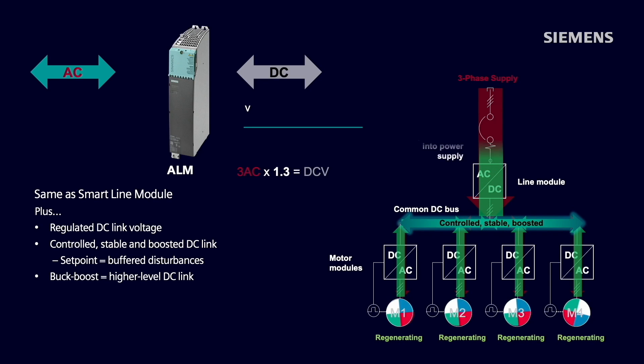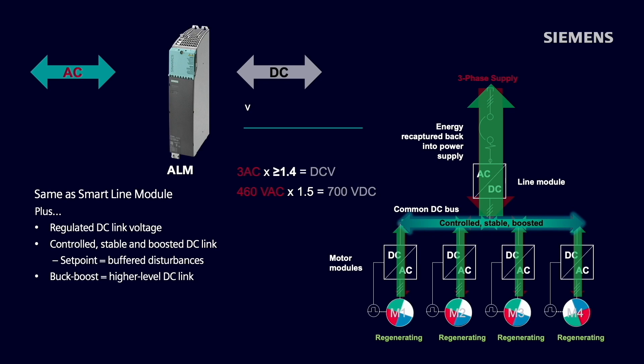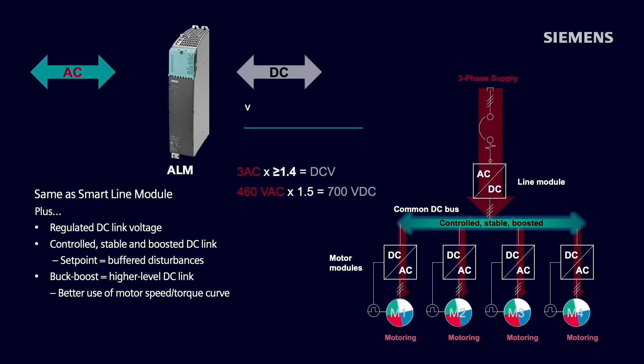The DC link is also a buck boost, so the DC link level will be higher with an active line module. Typically, we would be in the 1.3 range for the basic line module and smart line module, but an active module starts out at a 1.4 factor range. Typical default would be a 1.5 factor on the book-sized drive system, but could be regulated up to twice the incoming three-phase AC voltage. At a default value of about 1.5, at 460 volt supply, we would have a regulated 700 volt DC bus. This higher voltage allows us to better utilize the motor speed torque curve.